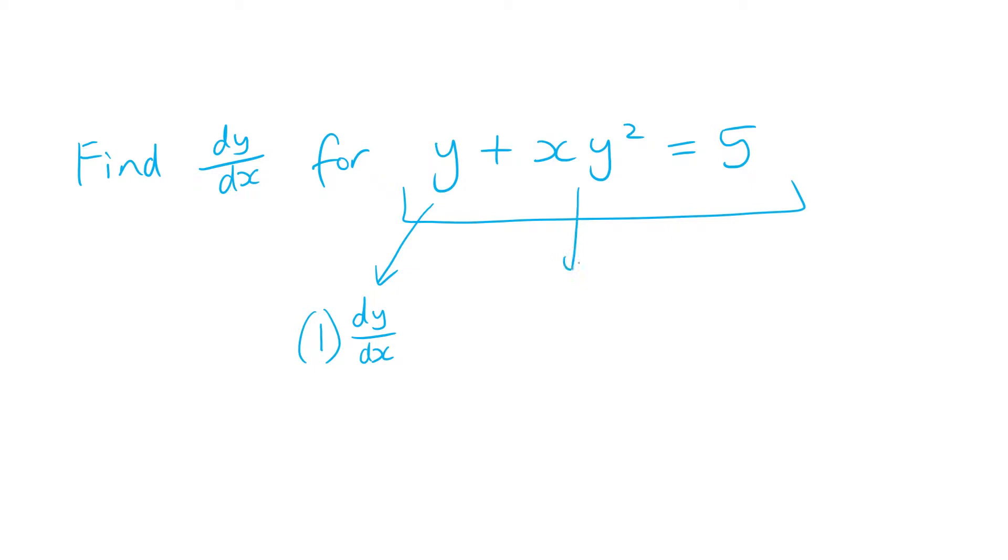Now for this one, we're going to have to use the product rule. So exactly the same as we'd normally do with the product rule. We'll change the first part of the equation first. So differentiate x is 1 and leave y squared as normal, like the second part as you'd normally do with product rule.